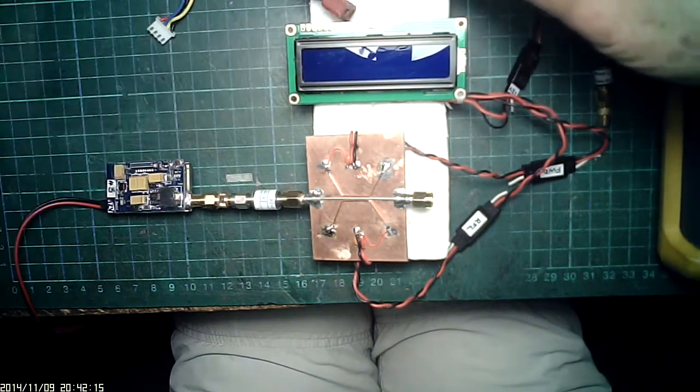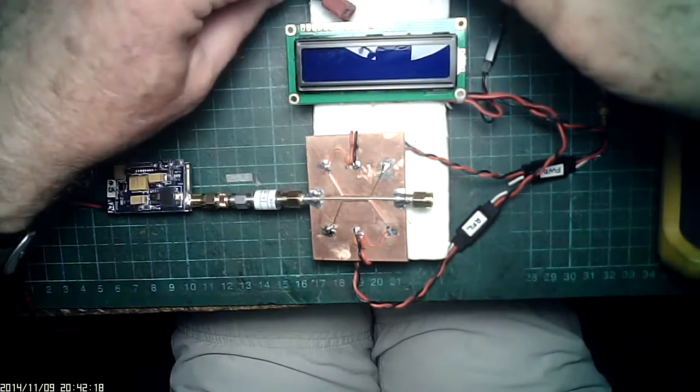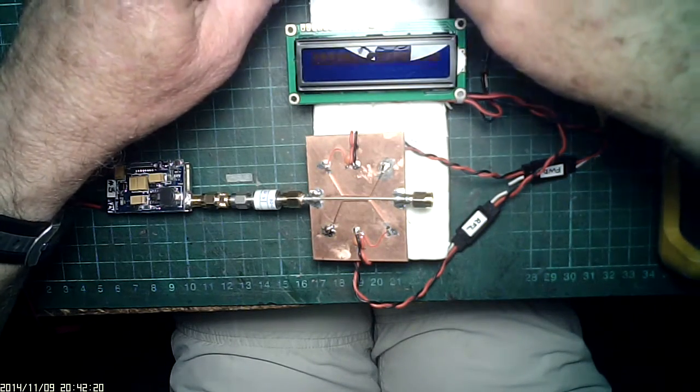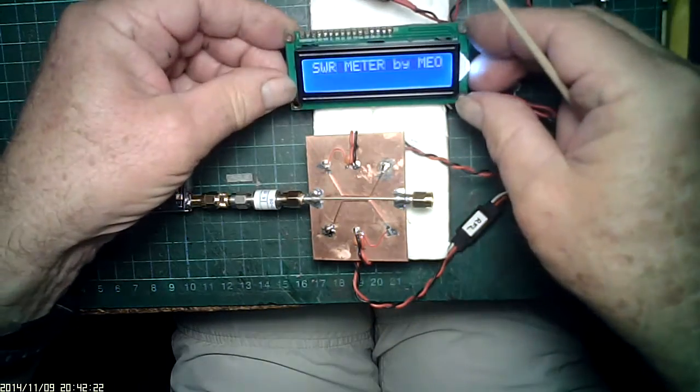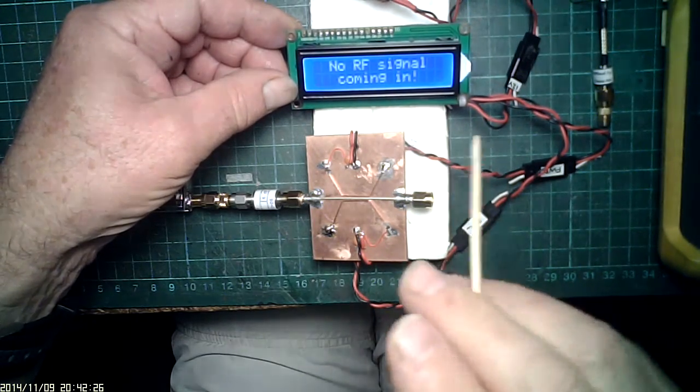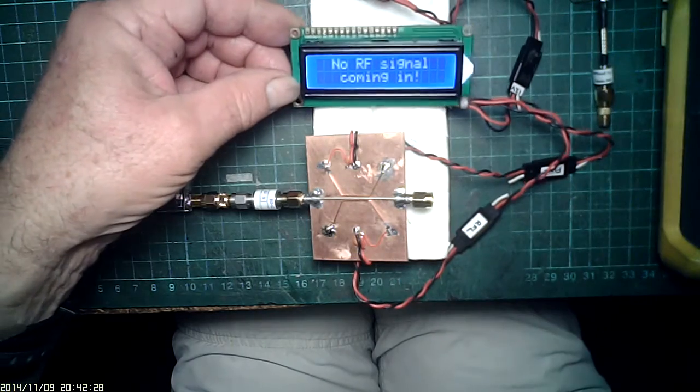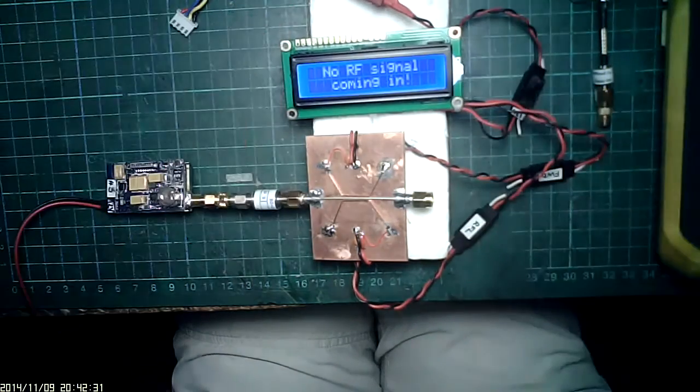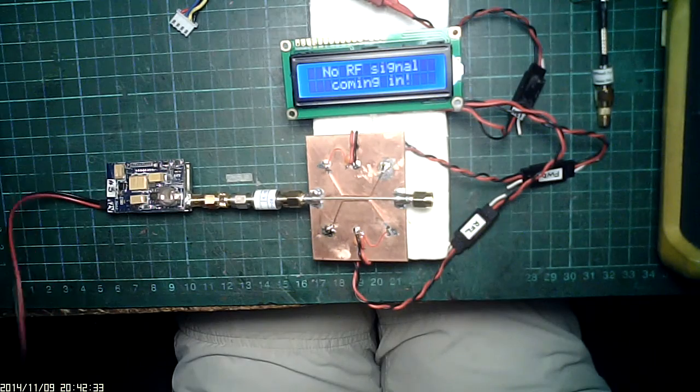We'll plug in the Arduino and you're going to look at the message if you're lucky. It comes up: SWR meter by Mio, no RF signal coming in. That's pretty cool, so give it some signal.